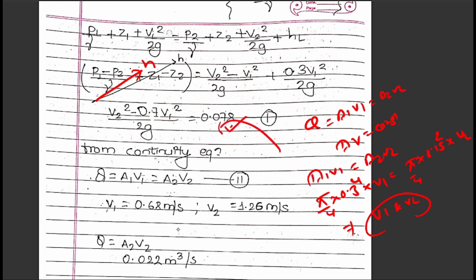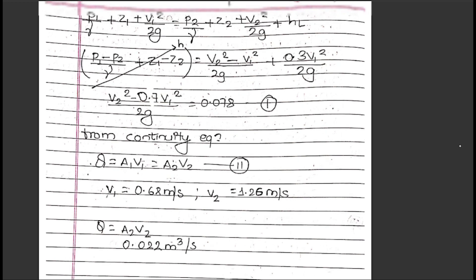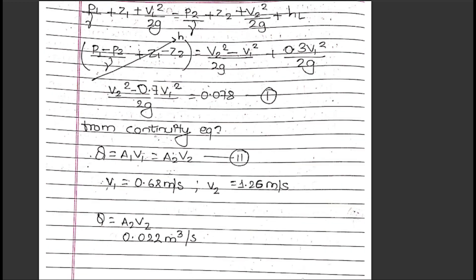The flow rate Q = A₁V₁ = 0.022 m³/s. That's the answer for the problem.